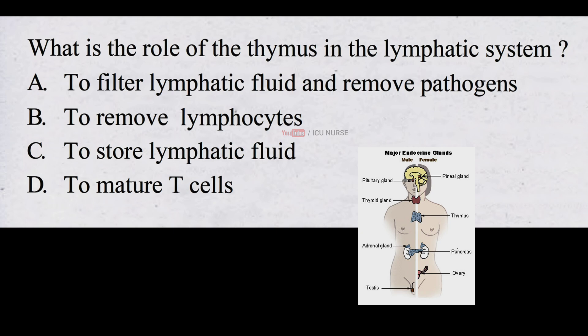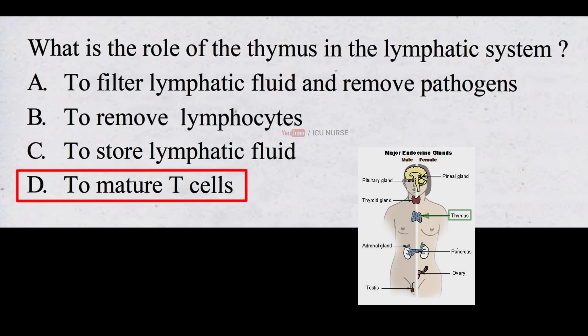What is the role of the thymus in the lymphatic system? A. To filter lymphatic fluid and remove pathogens B. To remove lymphocytes C. To store lymphatic fluid D. To mature T cells. The correct answer is D. To mature T cells. The role of the thymus in the lymphatic system is to mature T cells.